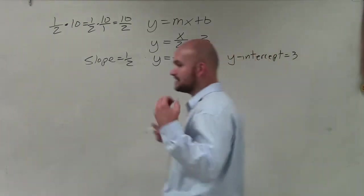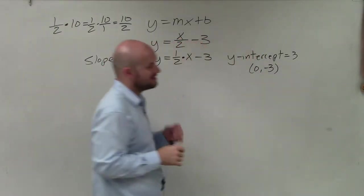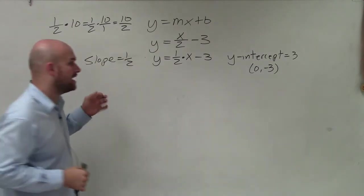Now remember, the y-intercept represents a point. So I always like to write it as a coordinate point. That's a coordinate point where x equals 0 and y equals negative 3.